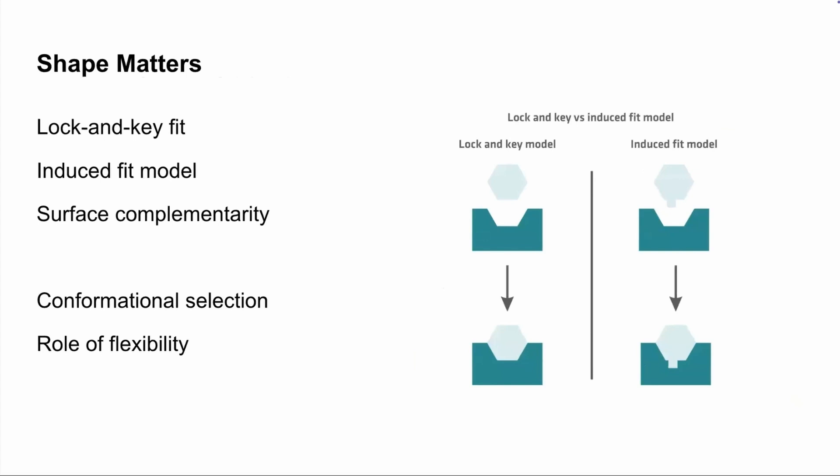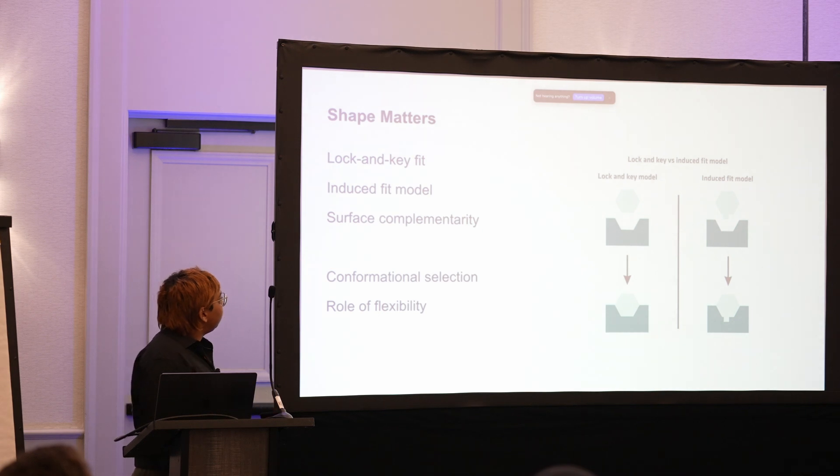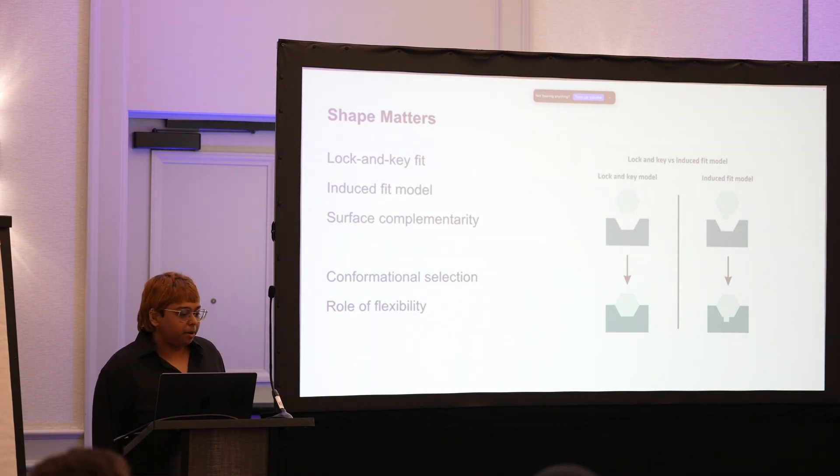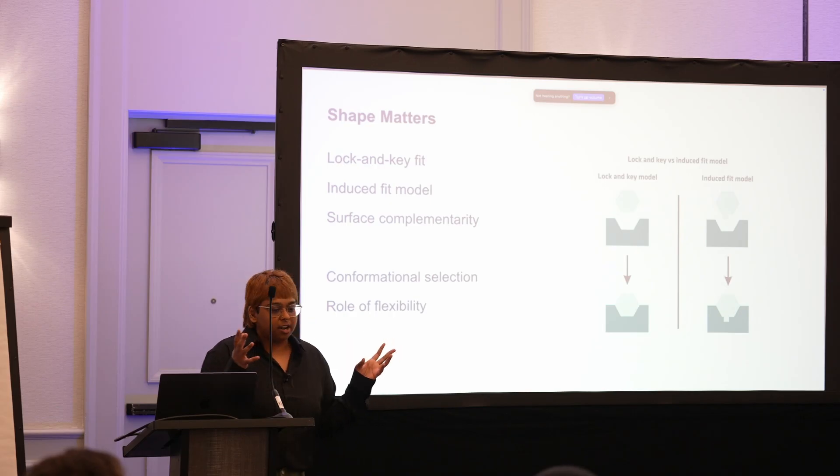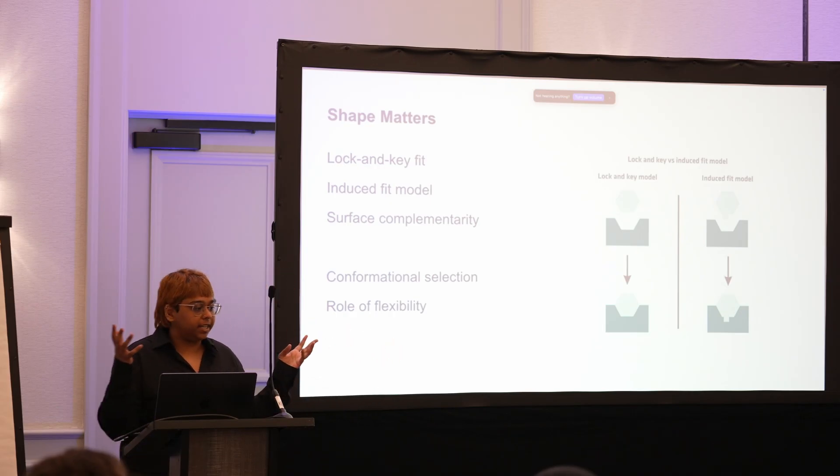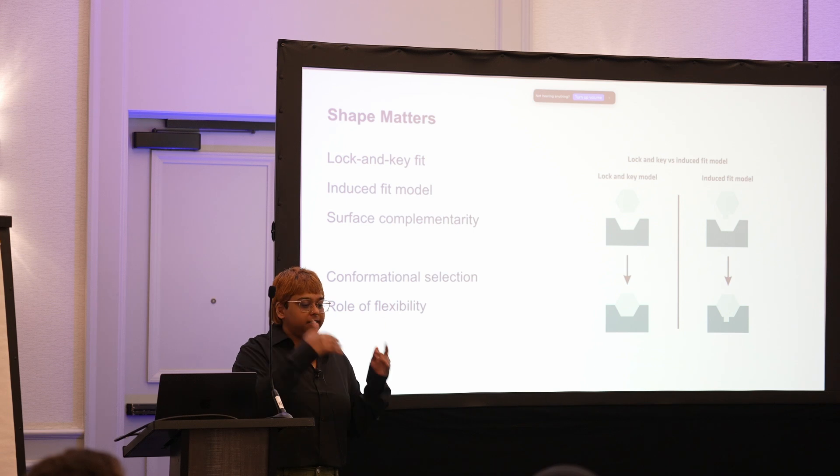So we used to think it was sort of a lock and key idea. I think that's kind of an older idea now. The induced fit model is more popular. But essentially, I like to think of it as having a surface which is complementary to the interface that you're designing. The surface actually has some amount of conformational flexibility. So it's sampling these different conformations. And what you really want to do is build an interface that stabilizes and interacts with one of these conformations.